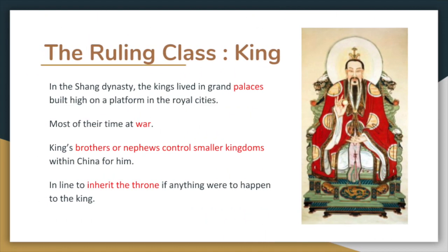The ruling class. At the head of a dynasty's ruling class was a king. In the Shang dynasty, the king lived in grand palaces built high on a platform in the royal cities. Kings spent most of their time at war with other clans. The king would allow his brothers or nephews to control smaller kingdoms within China for him. These men were also in line to inherit the throne if anything were to happen to the king.